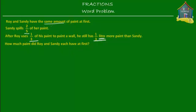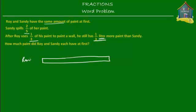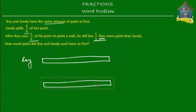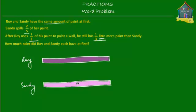Let's begin with what we have at first. Roy and Sandy have the same amount of paint at first. So let's suppose that this model here is the amount of paint that Roy has — let's call this Roy's paint. And since Roy and Sandy have the same amount of paint, Sandy must also have the same amount. Let's fill in some colors: purple for Roy and pink for Sandy.